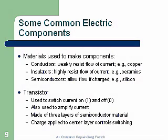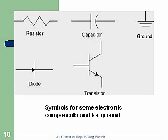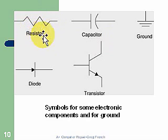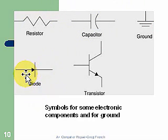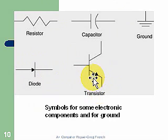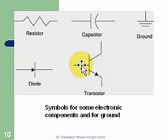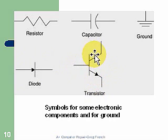Here are some examples of components: the resistor, the capacitor, a ground, and a diode. A diode only allows current to flow in one direction — against that arrow. The transistor has three elements; the center one is what we charge. As we charge it, we allow current to flow depending on the charge, giving us our change of state from a 0 to a 1.